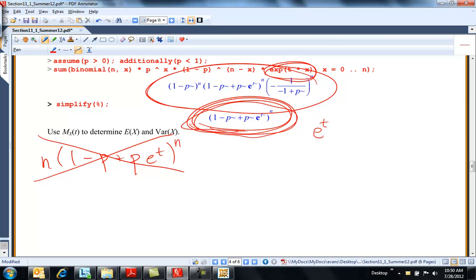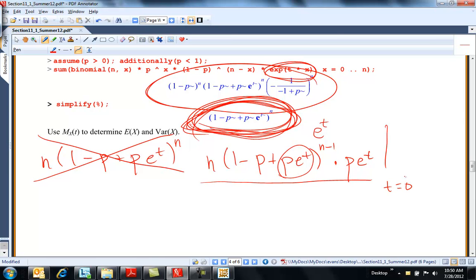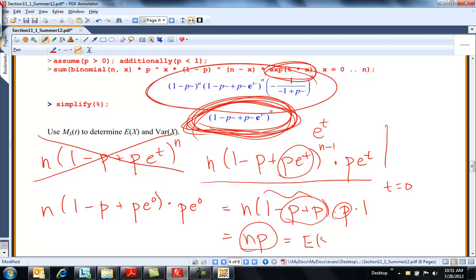I'm taking the derivative of this with respect to T. I should be more careful. So take the derivative of the outside by the chain rule. So this is N times 1 minus P plus P e to the T, raised to the N minus 1 times the derivative of the inside, which is P e to the T. So this is the first derivative, and I'm going to stick in T equals 0. So what do we get? N times 1 minus P plus P e to the 0 times P e to the 0, which is N times 1 minus P plus P times P. e to the 0 is 1, so this is equal to N. This is minus P plus P is 0, so this is 1. And this is P, so this is just N times P, which you already know is the expected value of a binomial. So that makes sense.